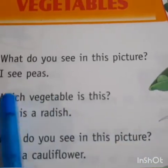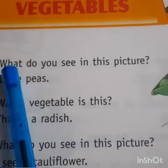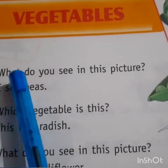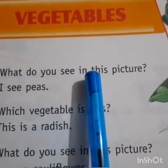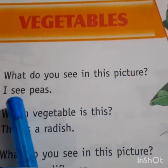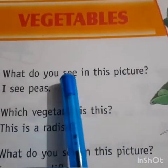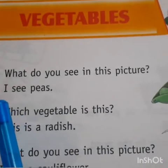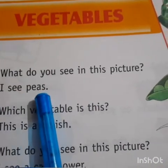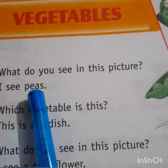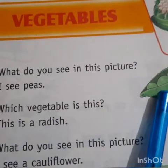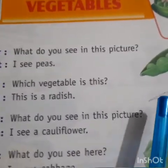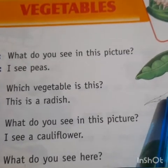See this picture. Question number 1: what do you see in this picture? The answer is: I see peas. Look at this picture — this is peas. And the next picture is radish.